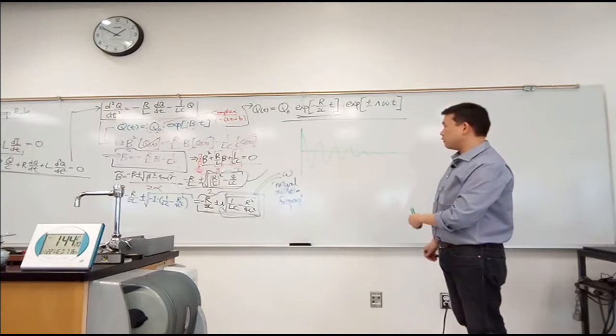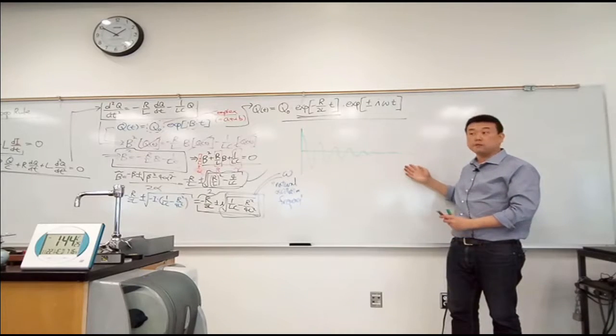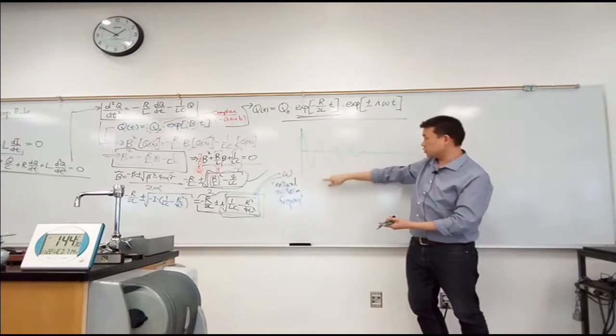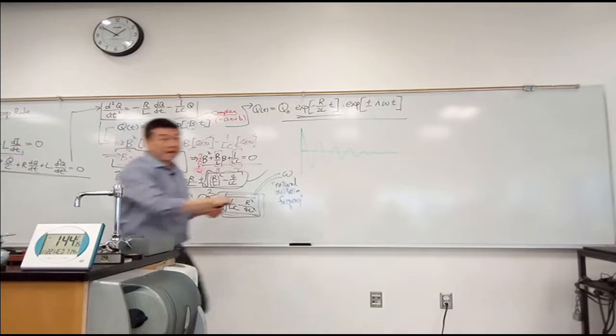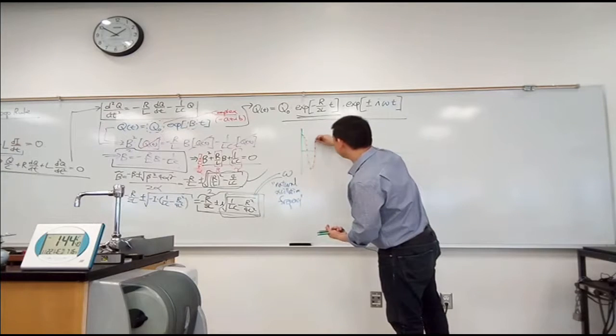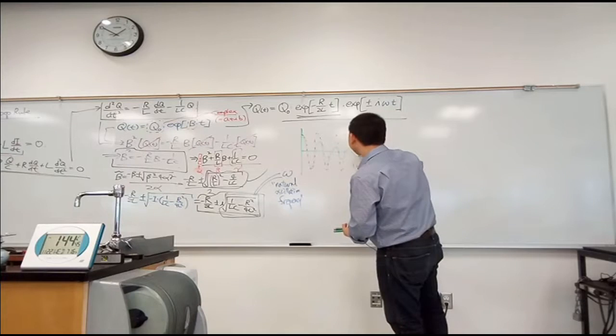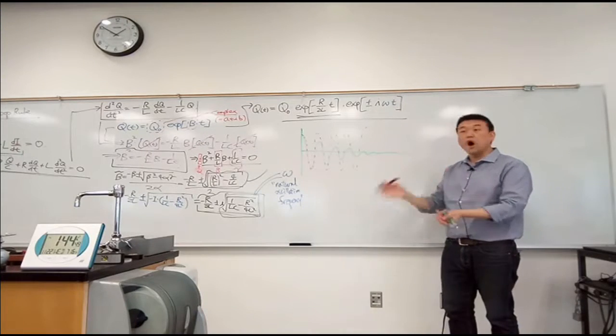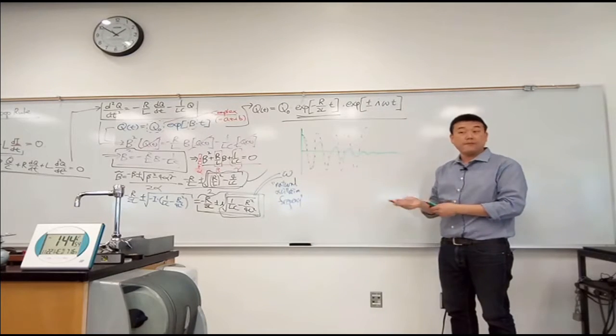When we say envelope, what we mean is we imagine this entire form as a result of a product. As a product of an oscillatory function, the actual sine wave, or in this case, cosine. Cosine wave whose amplitude is not changing. And you imagine factoring out this variation of amplitude to a single non-oscillatory function that you're going to multiply to this oscillatory function. That's what we mean by envelope.